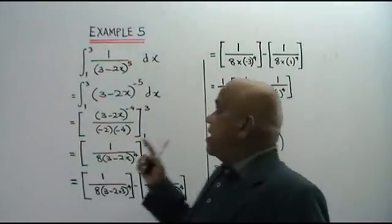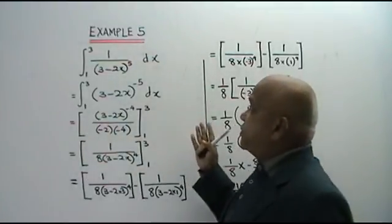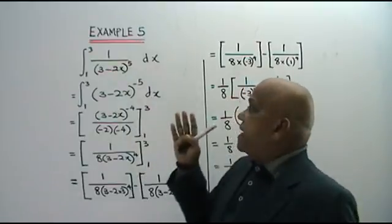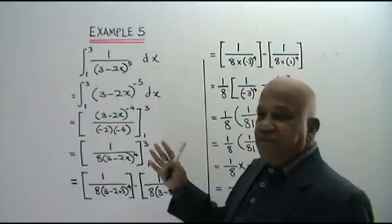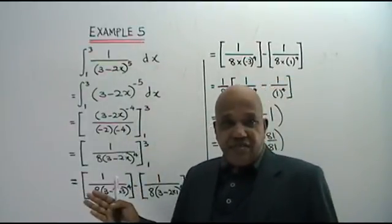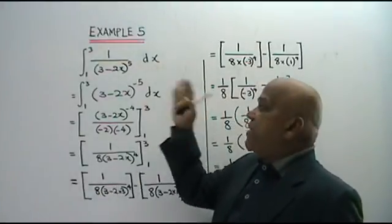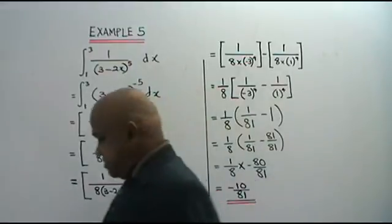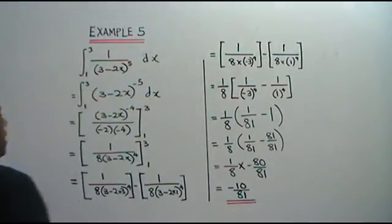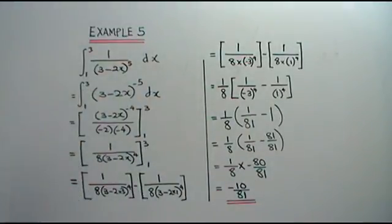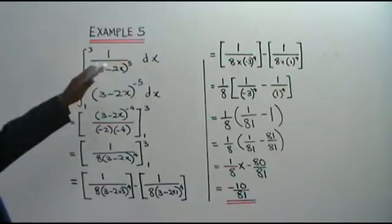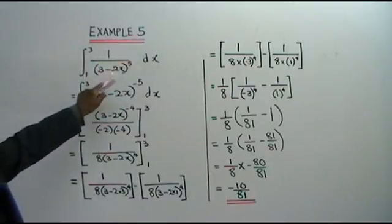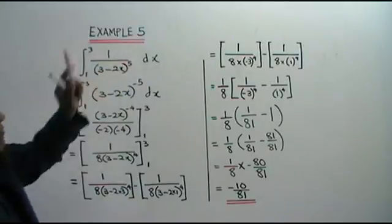Here I have for you another example based on definite integrals. Example 5. You are asked to integrate 1 over (3 minus 2x) to the power of 5.